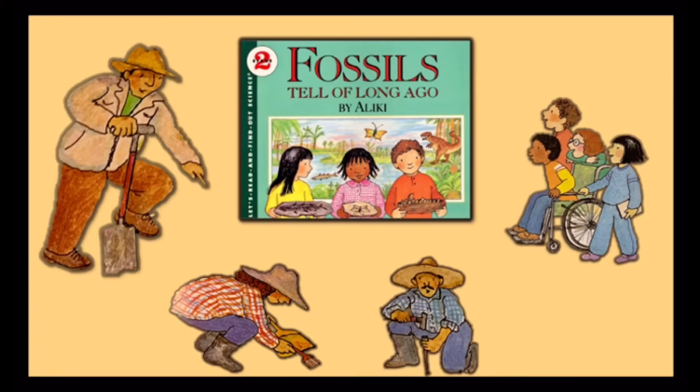We have learned many things from the fish, the fern, the fly, and the dinosaur tracks. Fossils tell us about the past. Fossils tell us that there were once forests where there are now deserts — 200 million years ago versus today.